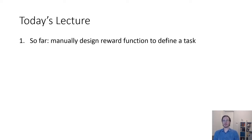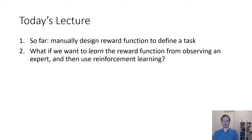So far, every time that we've had to take on a reinforcement learning problem, we always assumed that a reward function was provided for us. Typically, if you were to use these reinforcement learning algorithms, you would program a reward function by hand manually. What if instead you have a task where the reward function is difficult to specify manually, but you have access to data of humans or some kind of expert performing that task successfully? Could you back out their reward function from observing their behavior and then re-optimize that reward function with reinforcement learning algorithms?